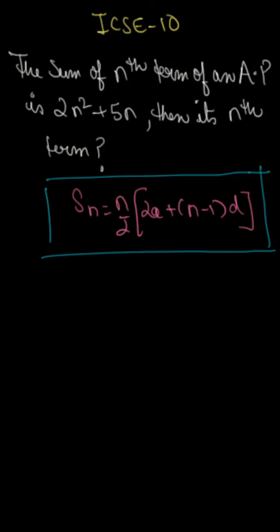Okay guys, look at this question. It's a conceptual question, but the formula is the one that we always use. So this is the sum formula, and we're talking about the sum of n terms, meaning sum of n is 2n squared plus 5n.